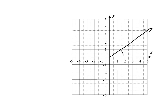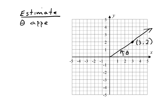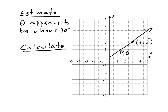Consider the angle in this sketch. The terminal side of the angle passes through the point where x is 3 and y is 2. We will use this point to calculate the angle. First, we estimate the angle from the sketch. This angle looks like it is about a third of the way from the x-axis to the y-axis, so it should be about a third of 90 degrees, making the angle about 30 degrees. Now we use the inverse tangent function to calculate the angle. Remember the tangent is y over x, so the tangent of this angle is 2 over 3.